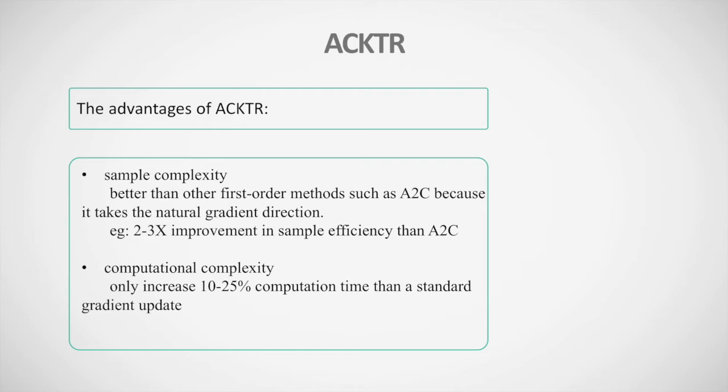By limiting the KL divergence, ACKTR ensures that the new policy does not behave radically differently from the old one, which could cause a collapse in performance. Regarding computational complexity, the K-FAC update used by ACKTR only takes about five percent longer than a standard gradient update. This contrasts with methods like TRPO, which requires a more expensive conjugate gradient computation.